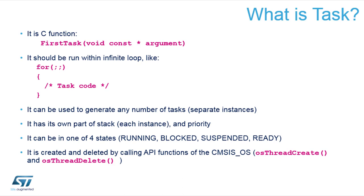But if you instantiate several tasks using the same function, this typically gives them an idea which task it is. So it can be a different TCP/IP port, or it can be the number of the task if it matters for debugging or communication purposes. The argument is the initial argument that's called when you create the task, and when it's executed it gets passed as an argument.